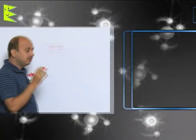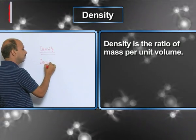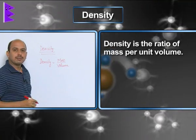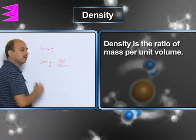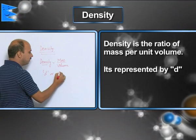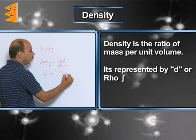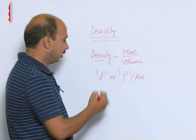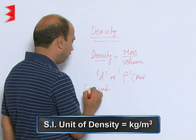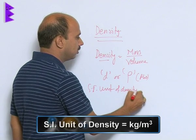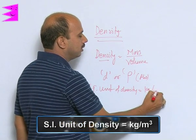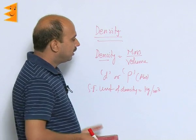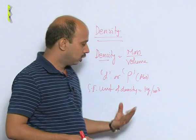Density is mass per unit volume. We can use symbol T or sometimes the symbol rho — both symbols can be used for density. The SI unit of density is kg per meter cube, though you can also write gram per centimeter cube.